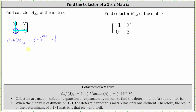Simplifying, we have negative one raised to the third power times the determinant of the one by one matrix where the element is seven, which is equal to seven. This gives us negative one times seven, which equals negative seven. The cofactor of a sub two comma one is negative seven.